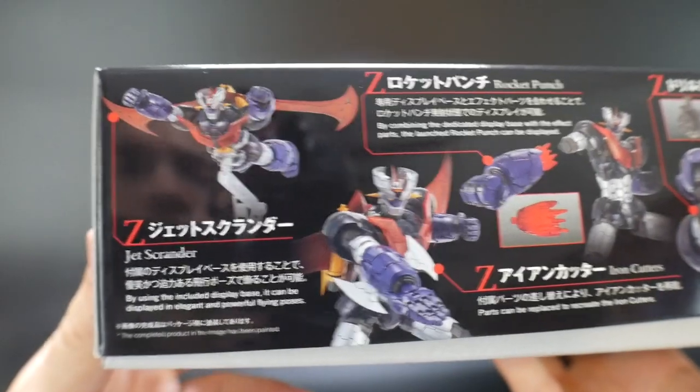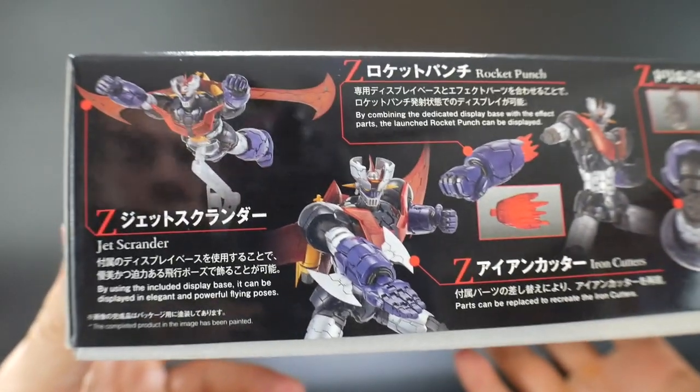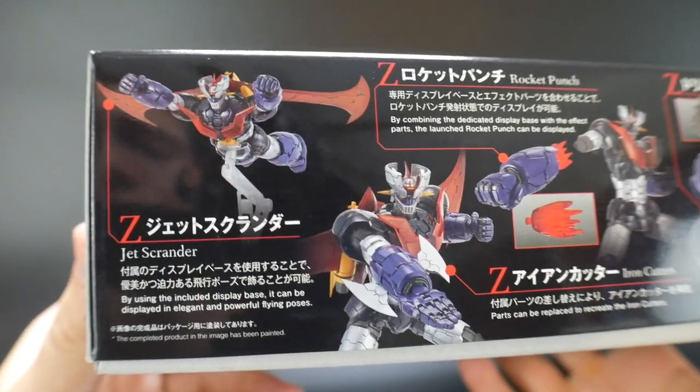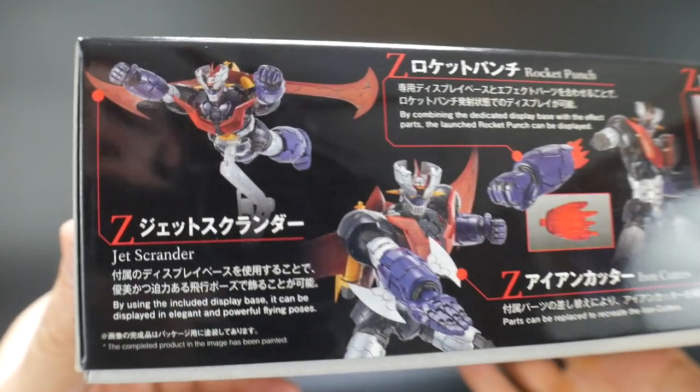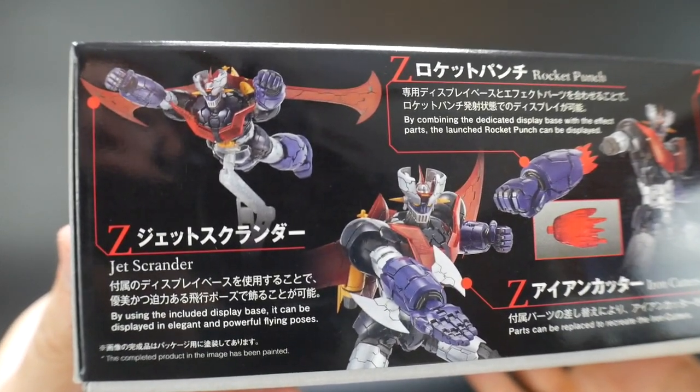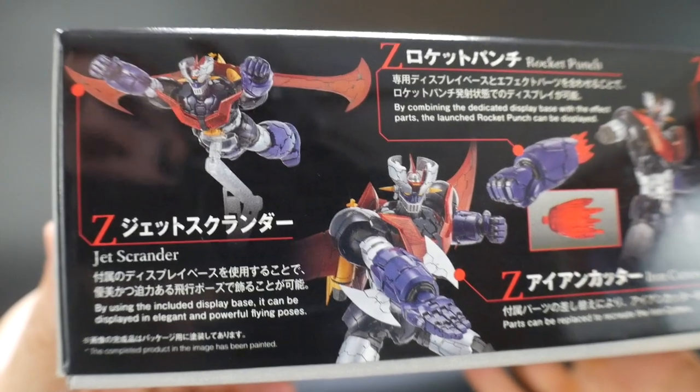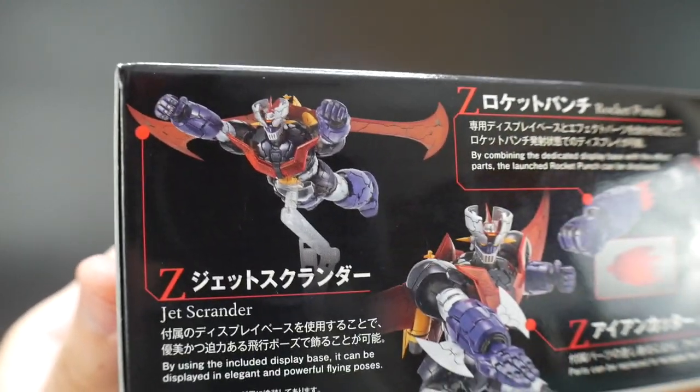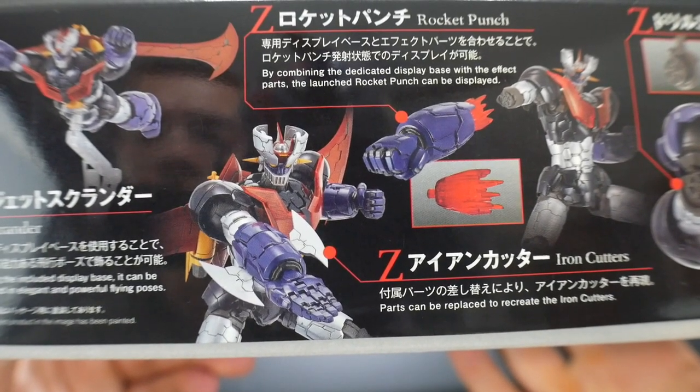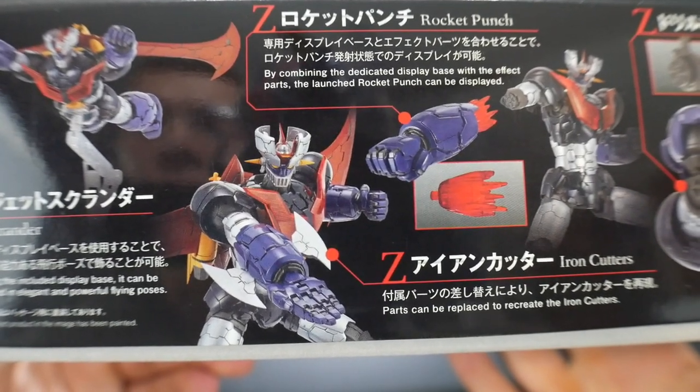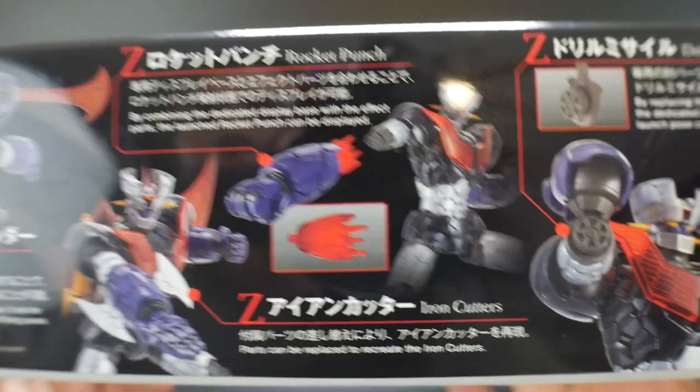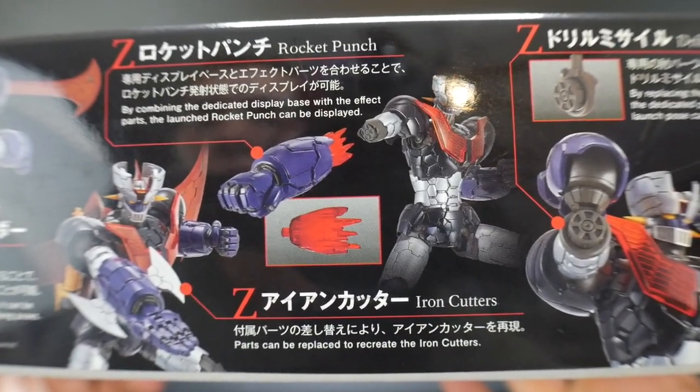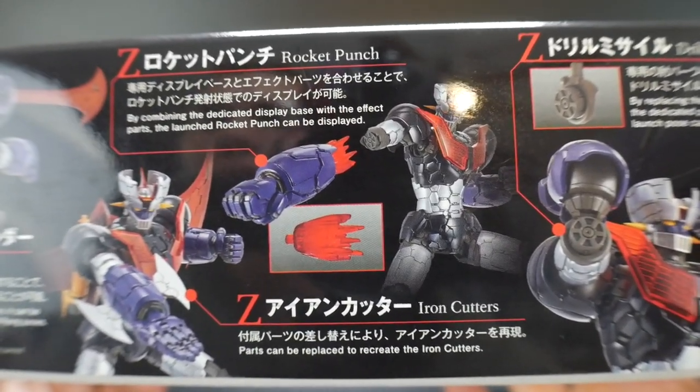And looking here on the side, you do see it has some nice little action poses. It has the Jet's Grandeur, so it's just pretty much a little jet mode where you fly through the air. And it also comes with a display base, so you can set it in that kind of pose. And you got the Iron Cutters, which are kind of like these little axes that pop out of the forearms.